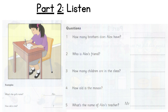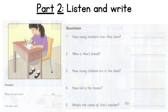Part two. Look at the picture, listen and write a name or a number. There are two examples. Hello, I'm your new teacher. I'm writing your names in my book. Are you Alex? Yes, that's right. How old are you, Alex? I'm seven. Seven. Yes, that's right. Can you see the answers? Now you listen and write a name or a number.